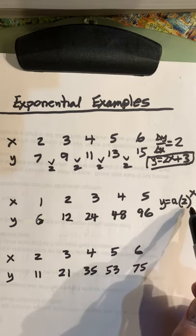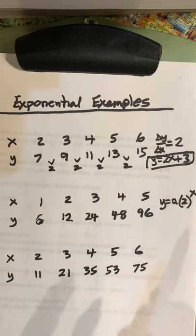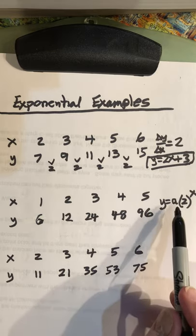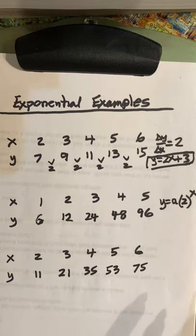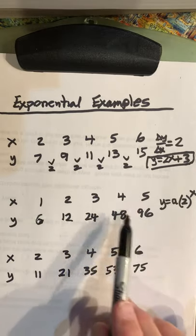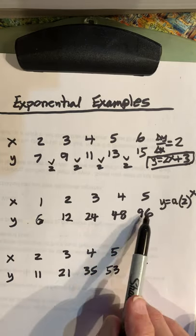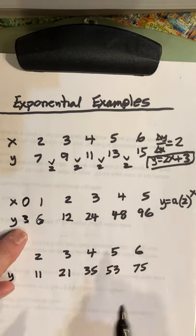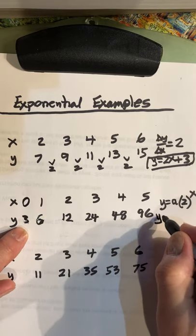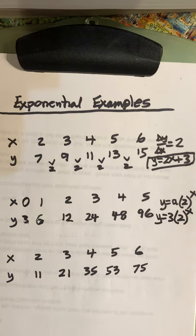The other thing that I know is that a, when it's just a times b to the x, the y-intercept is the a. Can I determine from this table easily what the y-intercept would be? Yeah. Because every time it's going this way, it's becoming half of the previous value. So at 0, this would be 3. That means this equation is y equals 3 times 2 to the x power.